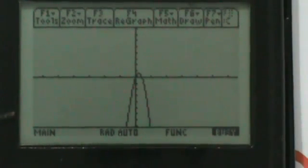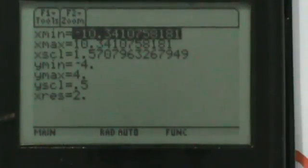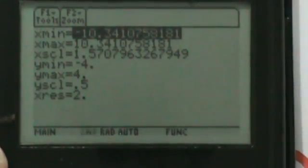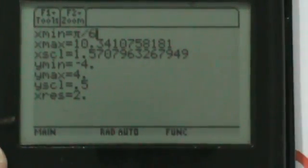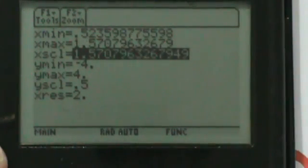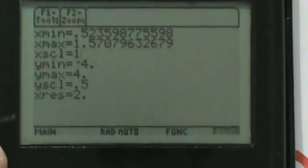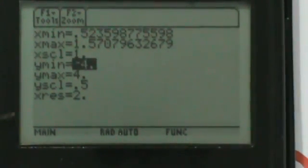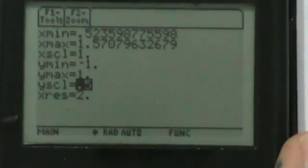This graph isn't very helpful, so let's change the window. We're looking between π/6 and π/2, so let's make x min π/6 and x max π/2. X scale will be one, y min negative one, y max positive one.